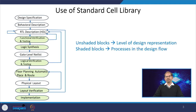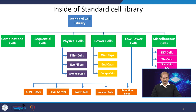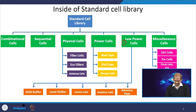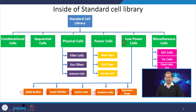In the last class we discussed the use of the standard cell library. Standard cells are used in the steps of logic synthesis and physical synthesis. In today's class we will discuss the low power cells first: always-on buffer, level shifter, switch cell, isolation cell, and retention cell — five different types. Then we will go to power supply related cells: well tap cells, end caps, and decaps. Then we will discuss miscellaneous cells: delay cell, tie cells, and clock cells.